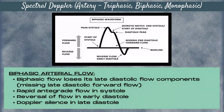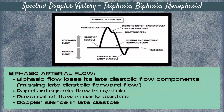The next type of arterial waveform is biphasic flow. Biphasic arterial flow loses its late diastolic flow component — it's missing that late diastolic forward flow. There's rapid antegrade flow in systole, a reversal of flow below the baseline in early diastole, and then Doppler silence in late diastole. The waveform does not come back up above the baseline in late diastole.